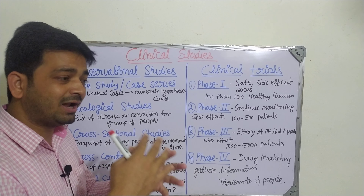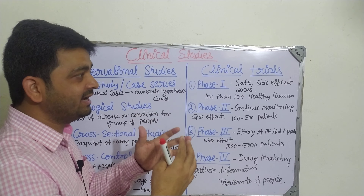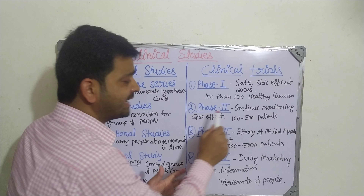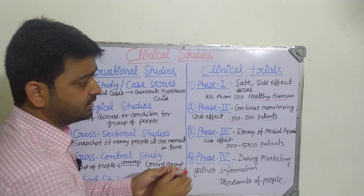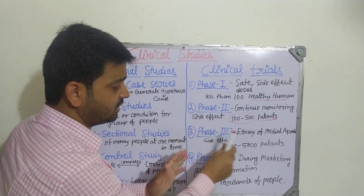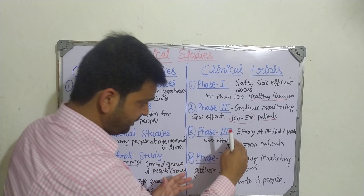Cohort study uses a large group of people observed over time — for example, after vaccination, what is the condition and how often cases are occurring. If COVID-19 cases are increasing again, it may be a fourth wave somewhere. When we are completely based on observation, observing what is going on, that is called observational study under the clinical studies.